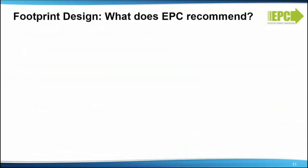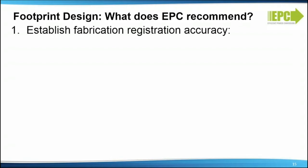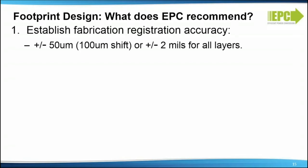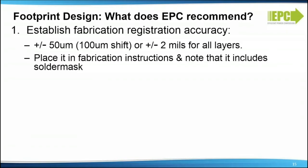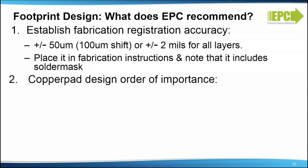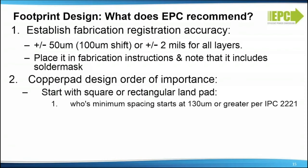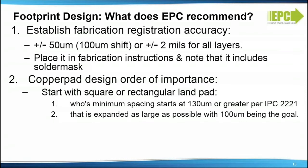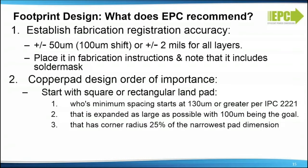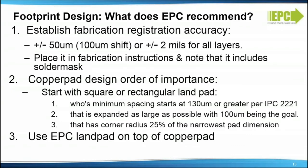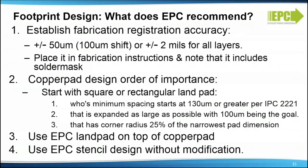What does EPC recommend for footprint design? First, establish a fabrication registration accuracy. EPC uses plus or minus 50 micrometers — 100 micrometers total shift, or plus or minus 2 mils for all layers. Place it in the fabrication instructions, noting that it includes the solder mask. Second, copper pad design order of importance: start with a square or rectangular land pad whose minimum spacing starts at 130 micrometers or greater per IPC 2221, expanded as large as possible with 100 micrometers being the goal, with a corner radius of 25% of the narrowest pad dimension. Third, use the EPC land pad design on top of the copper pad. Fourth, use the EPC stencil design without modification.